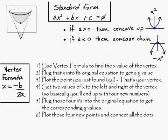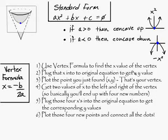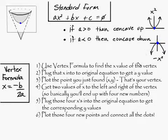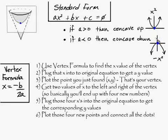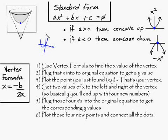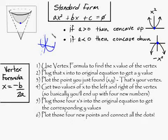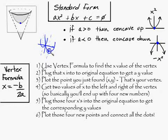Let me read you the steps. First, use the vertex formula to find the value of x of the vertex. When you plug in your b and your a into this formula, it gives you the value on the x-axis where the middle of the parabola is. In both these cases, the y-axis is the axis of symmetry — meaning it's the middle point of the parabola — and this is the vertex. Our first goal is to find out where that is.